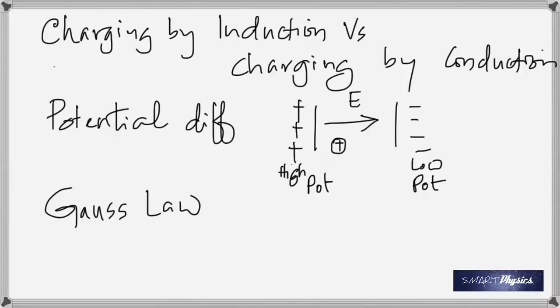The charge enclosed by the imaginary Gaussian surface — that's the key point in Gauss's law. ε₀ is 8.85 × 10⁻¹².